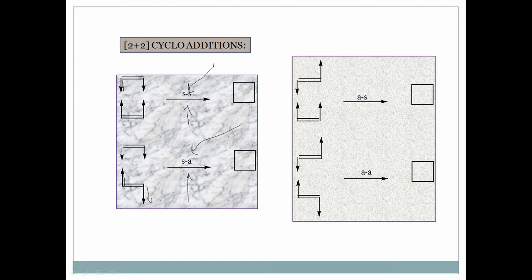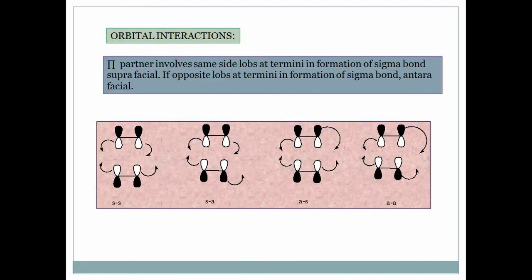For antara-supra cycloaddition, the left side uses the bottom face and the right side uses the top face — making that component the antara partner — while the other component is supra. In antara-antara cycloaddition, both components use opposite faces at their respective termini.